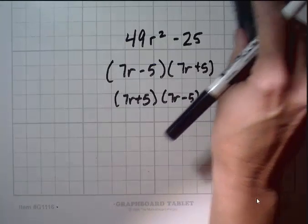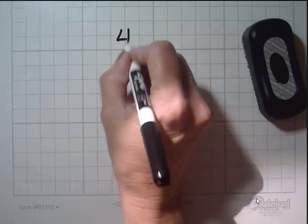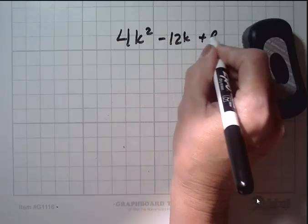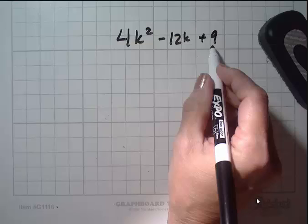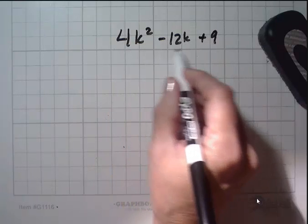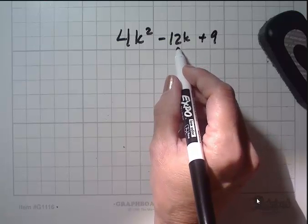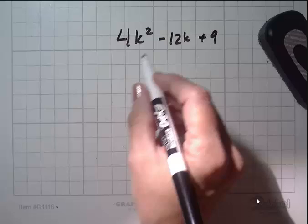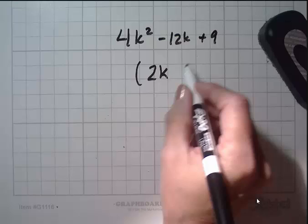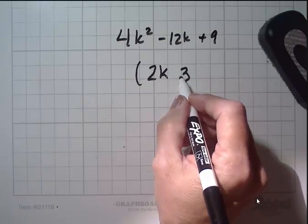So here's another special case. Sometimes you're going to see something that looks like this. 4k squared minus 12k plus 9. And you're going to say to yourself, well that's good. 9 is a perfect square and 4 is a perfect square. But what about this mess in the middle? And the answer is, don't worry about it. Don't worry about it.